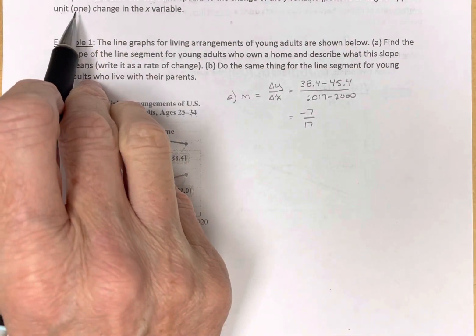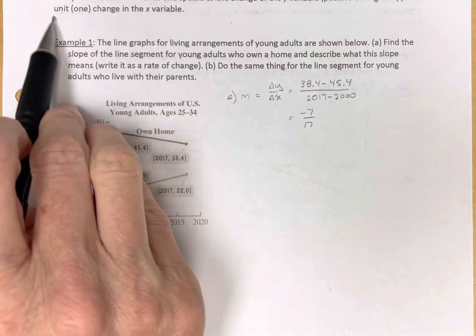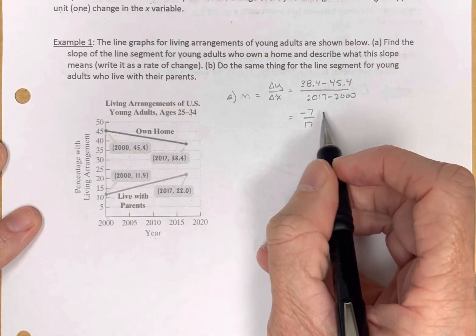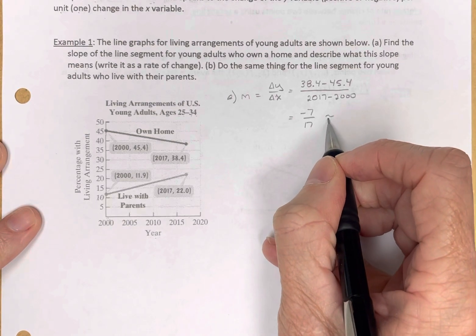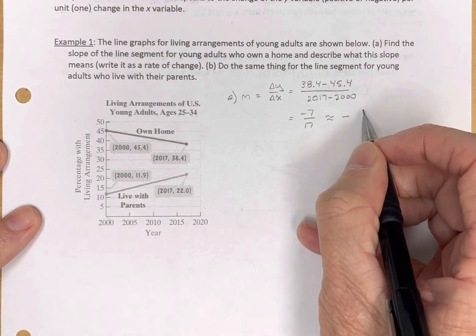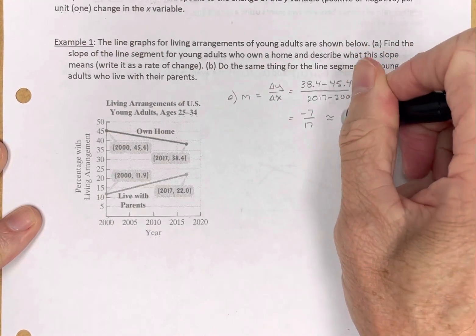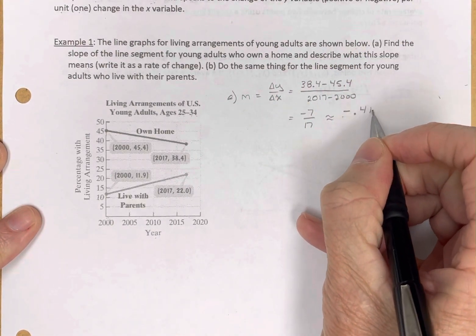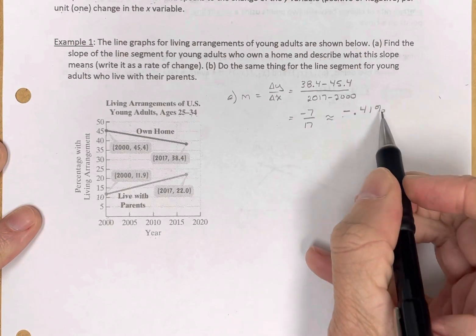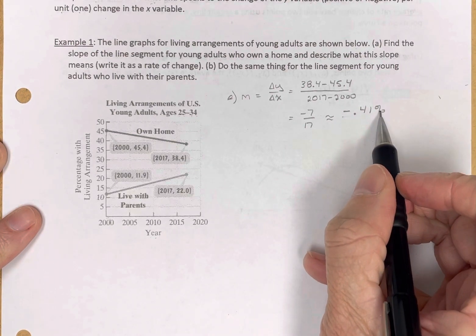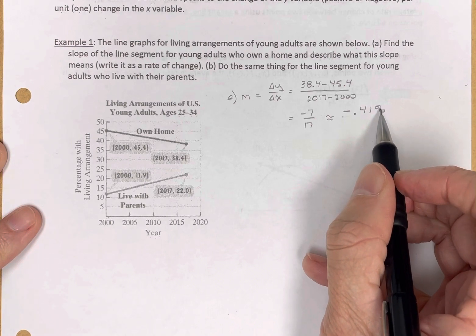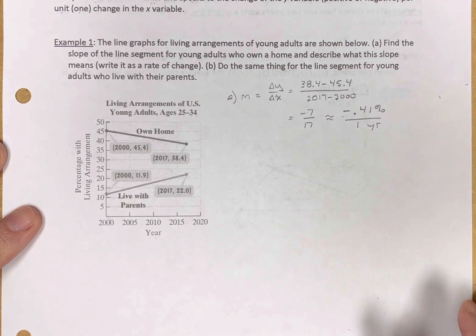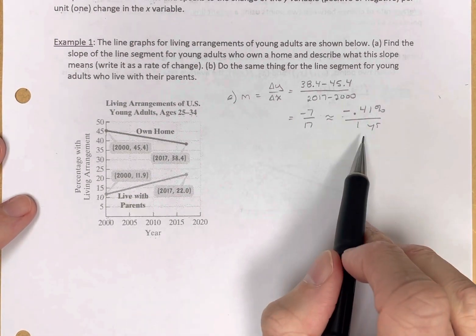Negative 7 over 17. And to make it per 1, right here we want to do per 1, we'll divide both numerator and denominator by 17. And we get a negative - put the negative in the numerator to make it more clear - a negative 0.41% per 1 year. So this is how we talk about it.